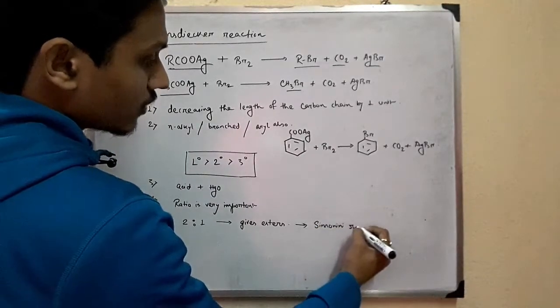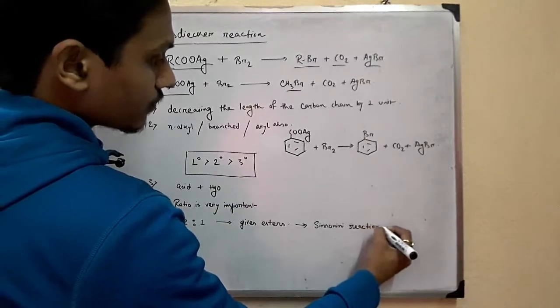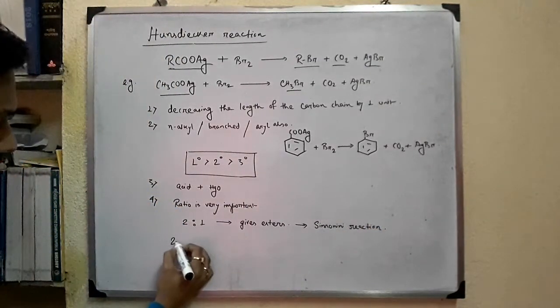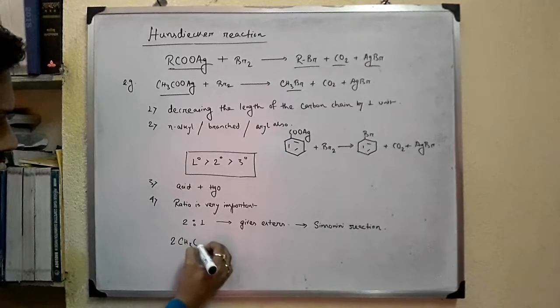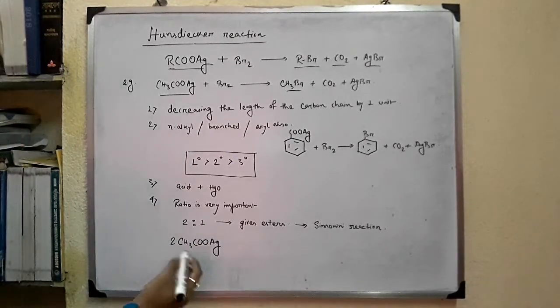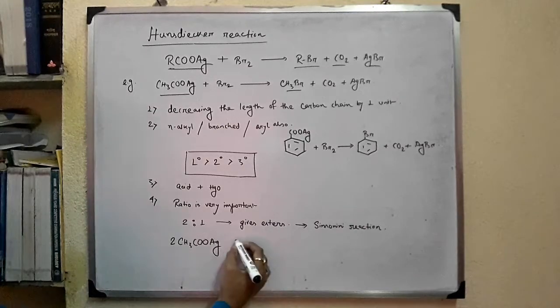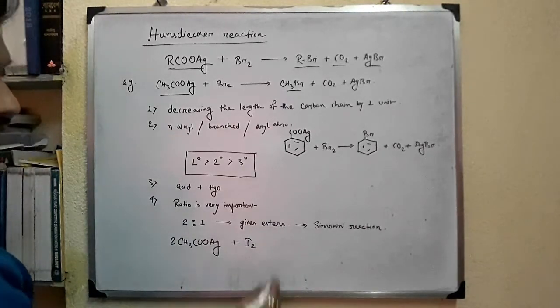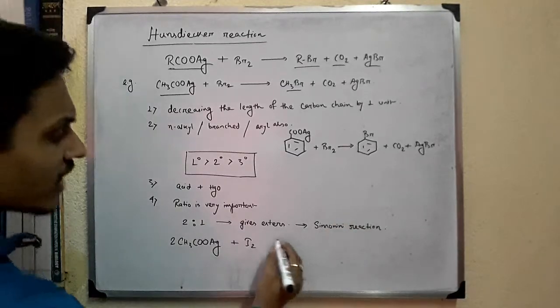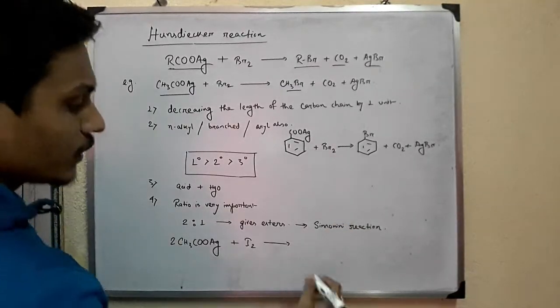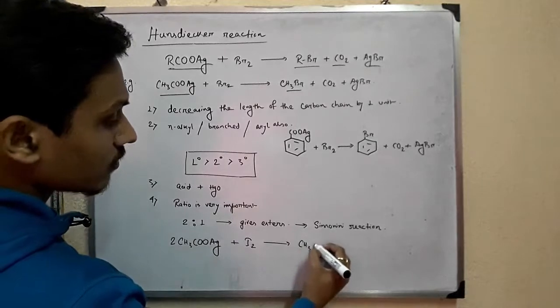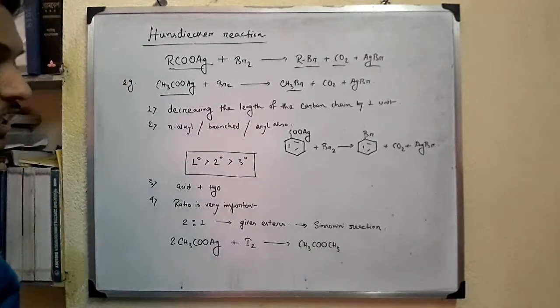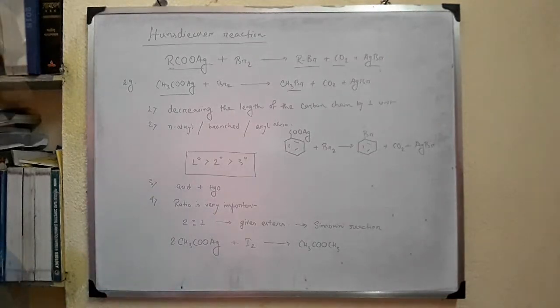Simonini reaction. In Simonini reaction, for example, two molecules of silver acetate react with iodine. Iodine is used in Simonini reaction. And we get CH3COOCH3, which is methyl acetate.